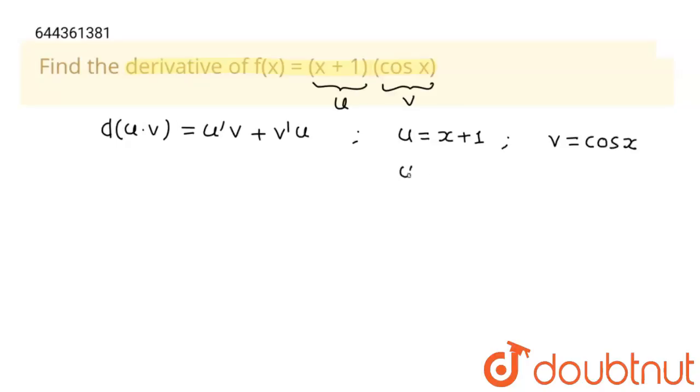So what is u dash? u dash is equal to 1. And what is v dash? v dash is equal to minus sin x.